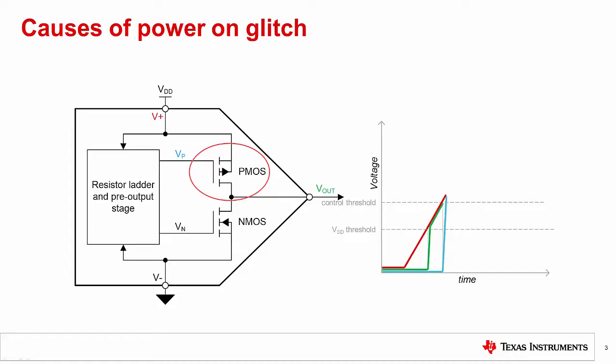When that occurs, the V-out voltage will now return to ground. Now the output will remain at the ground potential while the V-plus supply finishes its ramp and settles to the final value. The total energy of the glitch will increase when the supply ramps slowly, as the time from when the V-plus supply reaches the VSD threshold until it reaches the control threshold is longer.